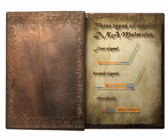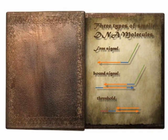All DNA molecules have their special identities here. Single strands serve as free signals that can interact with other types of molecules. When hybridized to complementary strands, they become bound signals that are inhibited from interacting with other molecules. Thresholds eat free signals while destroying themselves.